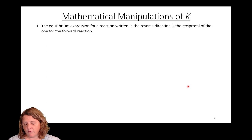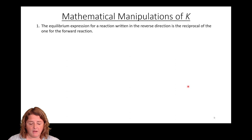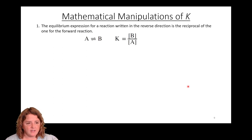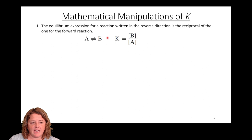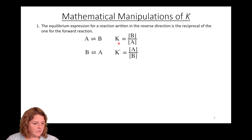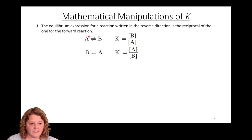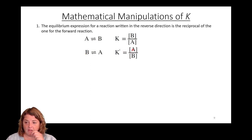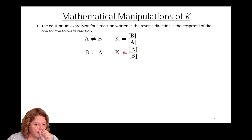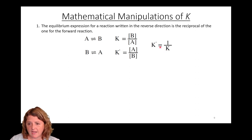Another thing we can do is mathematically manipulate the equilibrium constant. If I have a reaction A to B, the equilibrium constant is products over reactants: B over A. If I think about the reverse reaction B going to A, now my reactant is my product and my product is my reactant, so the equilibrium constant would be A over B. We call it K prime, and K prime is just the inverse of K — 1 over K.